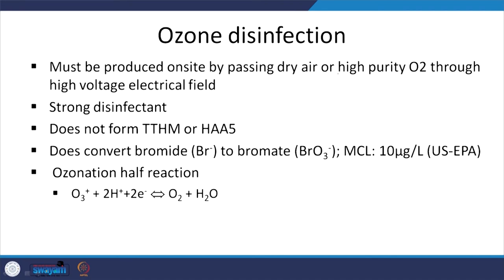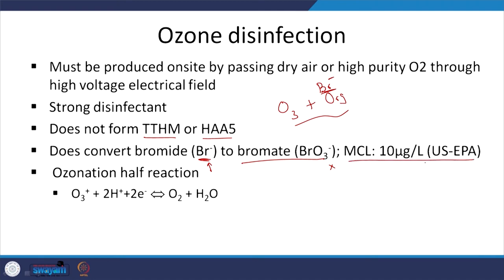Ozone disinfection: one advantage is it does not form trihalomethanes or haloacetic acids, but it does form something else — bromate — if bromide (Br⁻) is present in the water. Ozone reacts with Br⁻ to form bromate, which is toxic and possibly carcinogenic. India has no standard for bromate, but US EPA regulates it at 10 ppb, which is very low. Ozone is one of the strongest oxidizing agents — probably the second strongest — with a very favorable half-reaction as an electron acceptor.